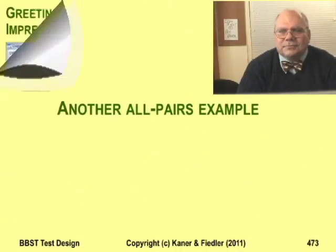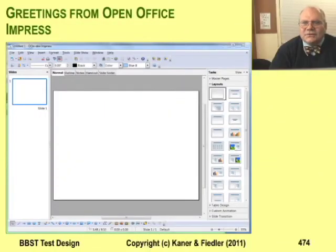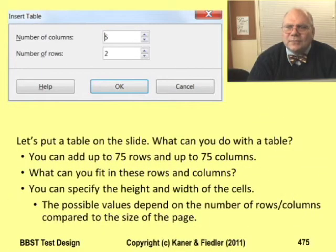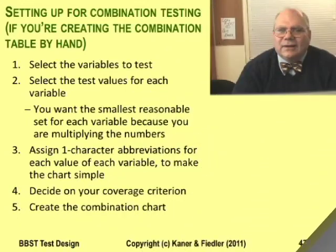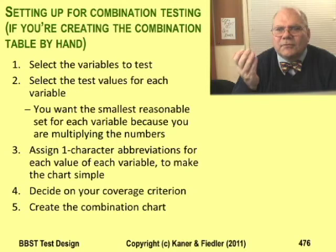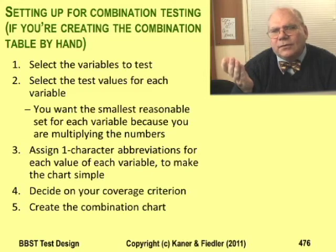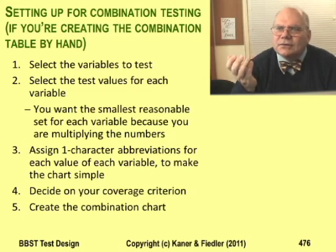Let's work another example. This example is from OpenOffice Impress — what variables are involved when you add a table to a slide? Here's my overview of a process for planning a combination test. At this point, you're selecting the group of variables. So far, my list includes the number of rows and the height of the rows, the number of columns, and the width of the columns.